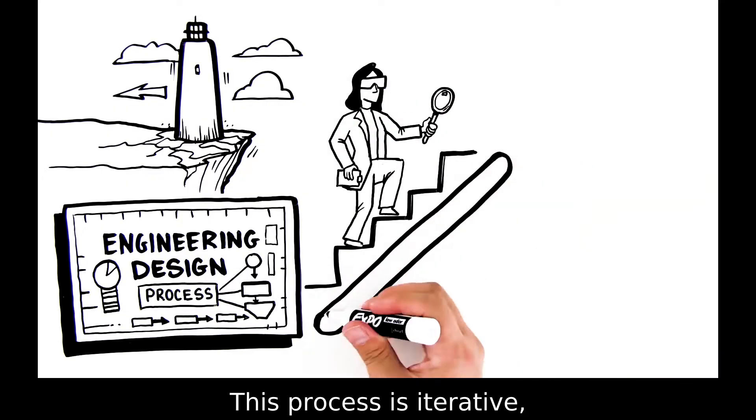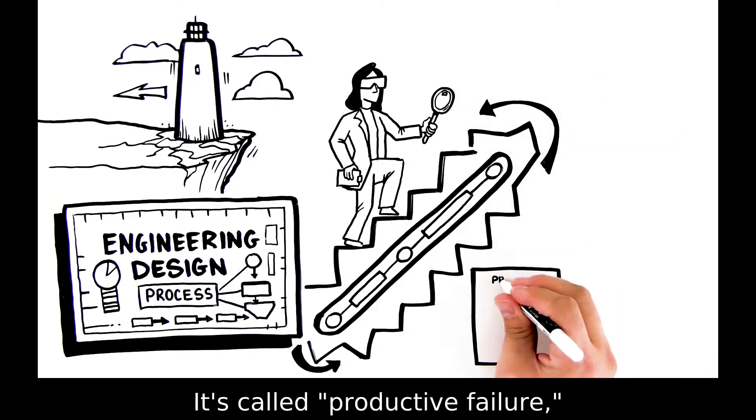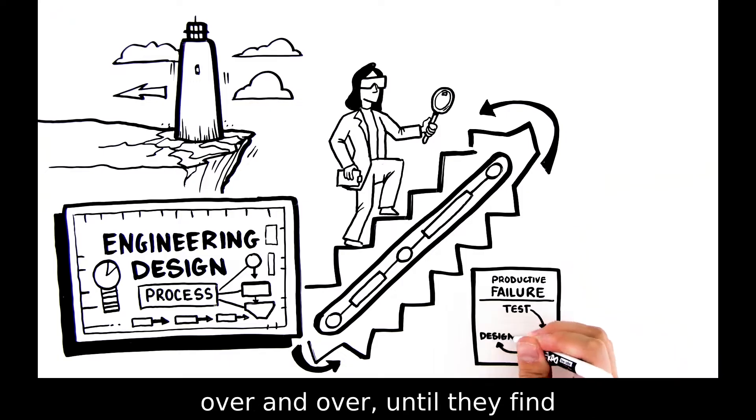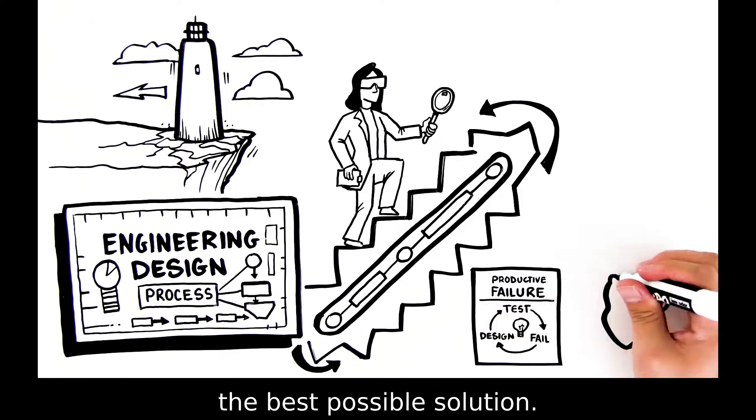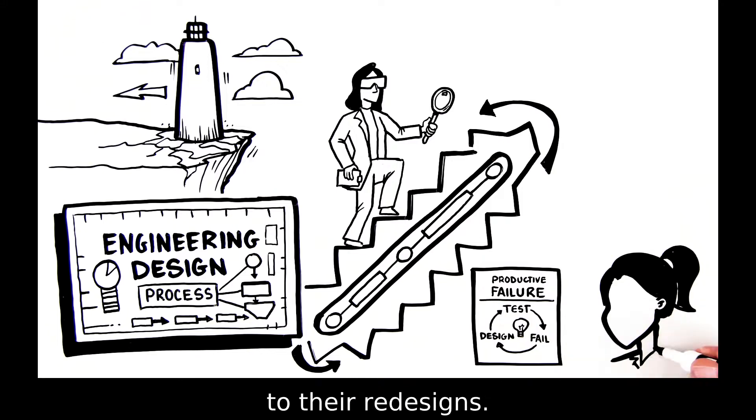This process is iterative, meaning they'll cycle through it multiple times, and failure is part of it. It's called productive failure, meaning engineers test, fail, and design over and over until they find the best possible solution. Engineers learn from failure and apply what they learned to their redesigns.